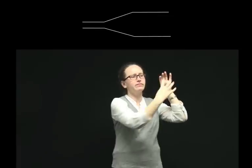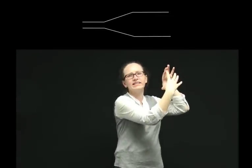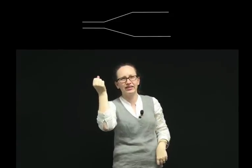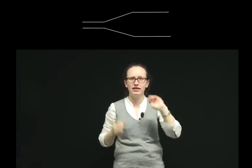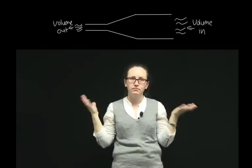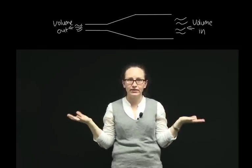Now imagine what would happen to our hose if we had a really wide end here and a narrow end down here. Would it still be true that the volume we put in in one minute here comes out in one minute there? Well, yes, it would be.